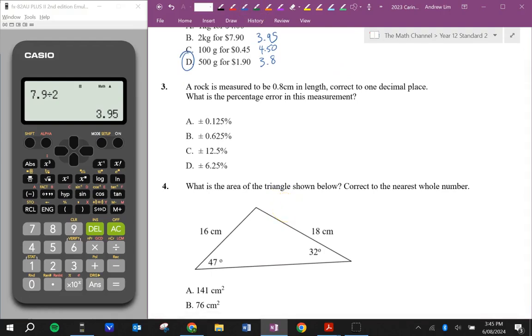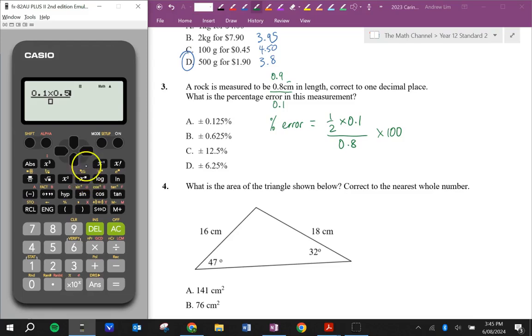A rock is measured to be 0.8cm in length, correct to one decimal place. What is the percentage error in this measurement? So a reasonable person would say that the next number is 0.9. Therefore the precision, we're just going to subtract these two numbers, is 0.1. So the percentage error is half of the precision, 0.1, divided by the measurement, times by 100 to turn it to a percentage. So we've got half of 0.1 over 0.8, times by 100, 6.25%.